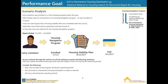Let's review one final scenario. Larry Lemelson was enrolled in a crisis housing program earlier this year. After finding a job, he connected to our housing navigation program and was enrolled on July 7, 2017. It was not until August that a housing stability plan was completed with him, but by September, Larry had found an apartment and moved in. On that day, he was exited from the housing navigation program. Did Larry achieve the performance goal of exiting to permanent housing during the reporting period? Was he enrolled in the program during the reporting period? Did he exit to a permanent housing destination or attain a referral? Did he exit during the reporting period?